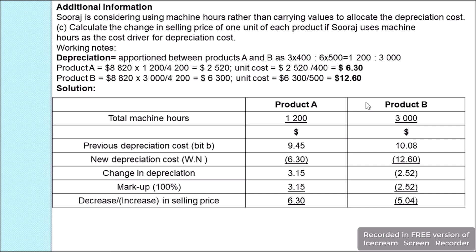For product A, the previous depreciation was $9.45 and the new depreciation is $6.30, a reduction of $3.15. With a 100% markup, the impact on selling price is $3.15 + $3.15 = $6.30 reduction. Therefore, the selling price of product A decreases by $6.30.